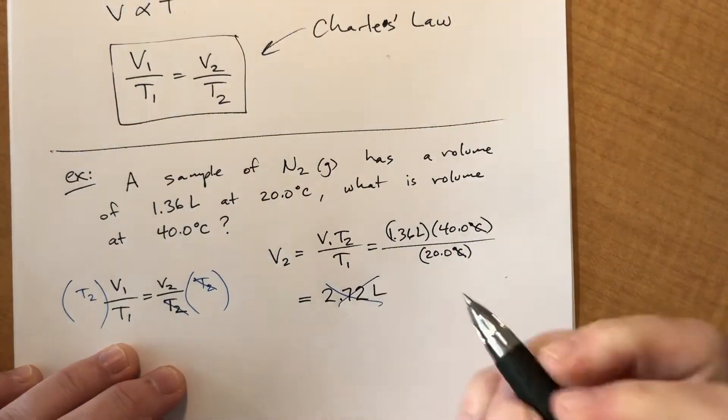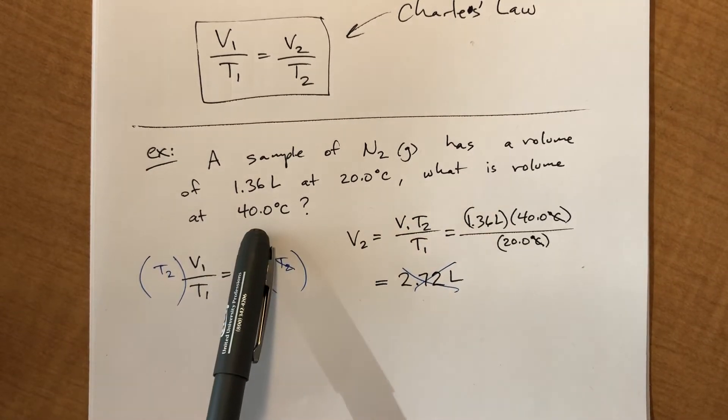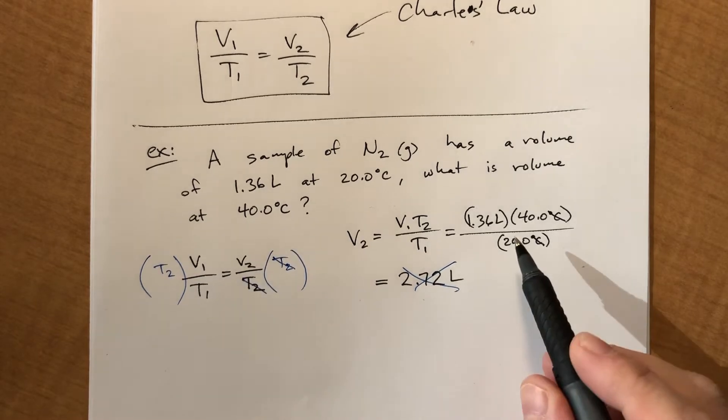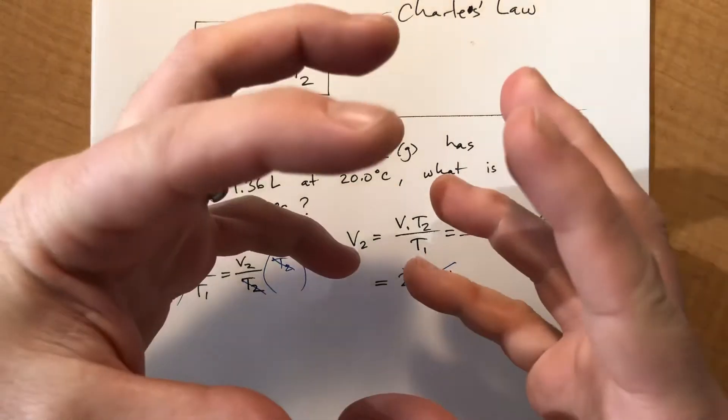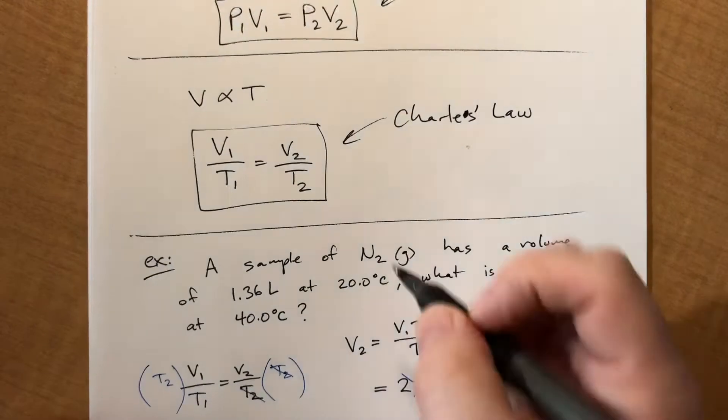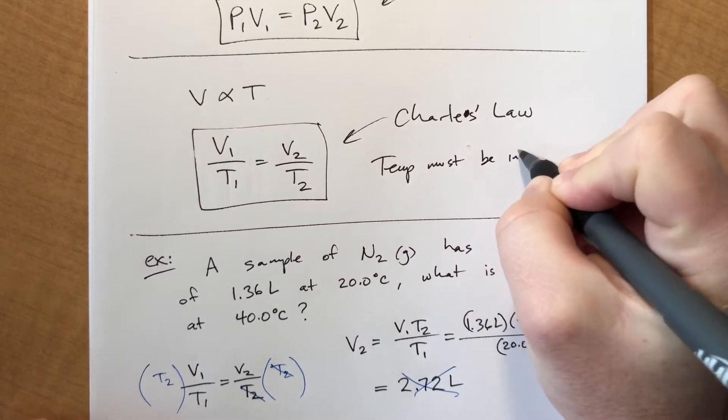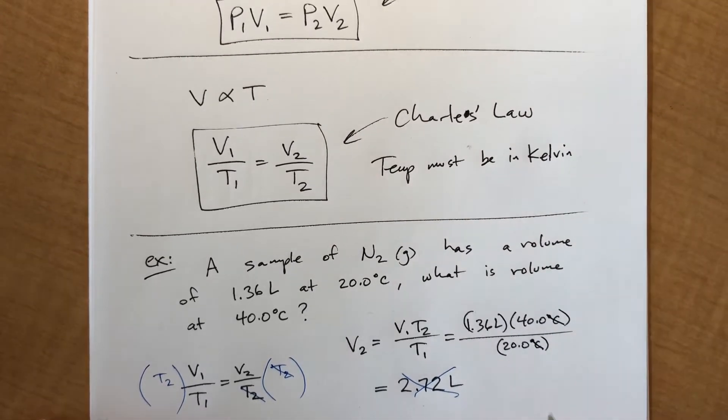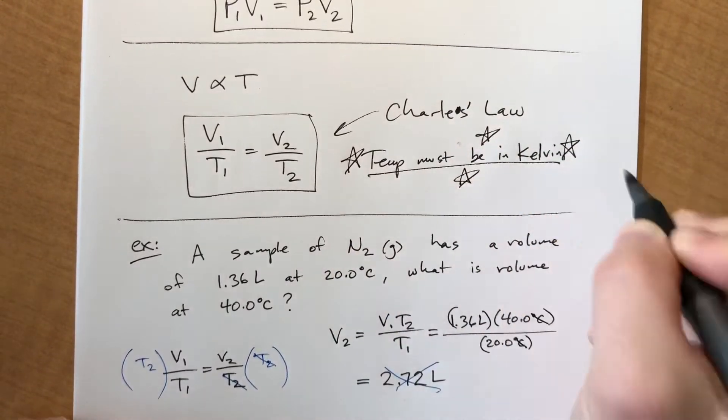That answer is wrong. Here's the problem. What would happen if I said we went from 20 to negative 20? Let's say it got colder. If you plugged in 20, and then your final temperature was negative 20, you would end up with negative 1.36. You would end up with like a negative volume. And that is literally impossible, and it doesn't make any sense whatsoever. So for anything involving gas laws, your temperatures must be in Kelvin.